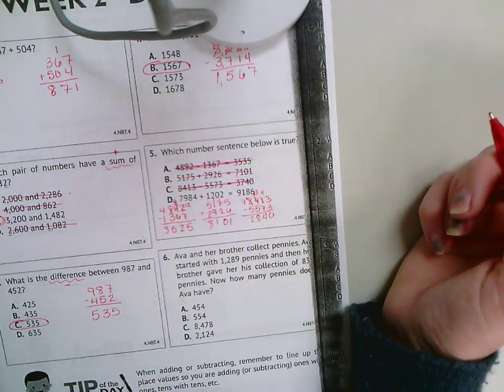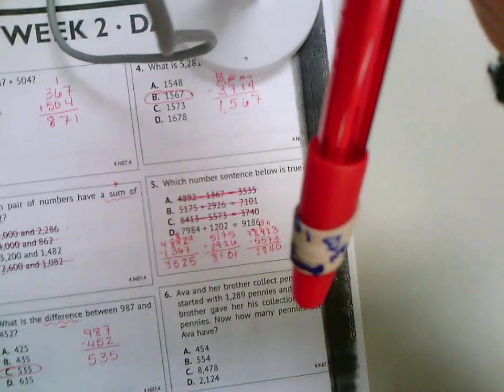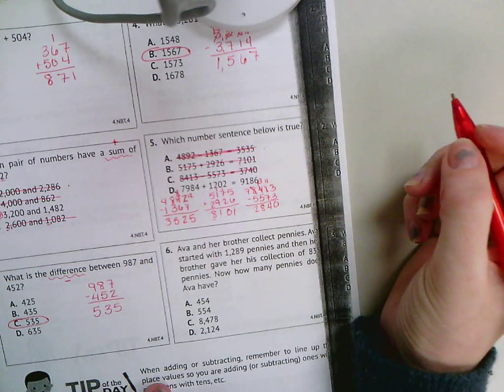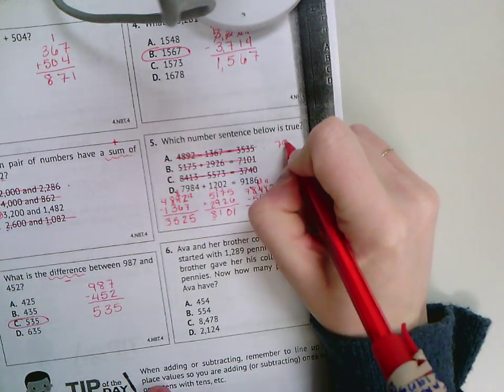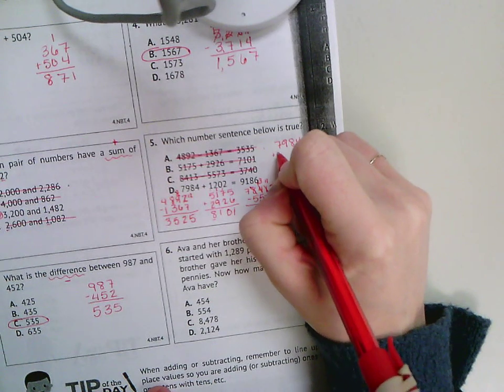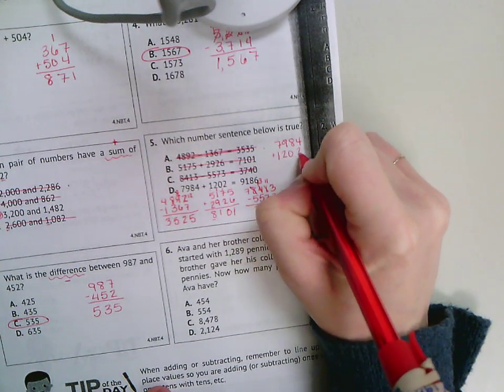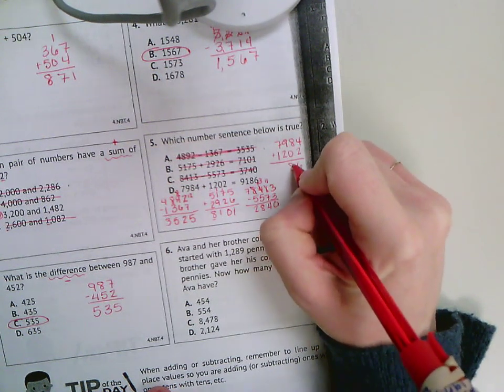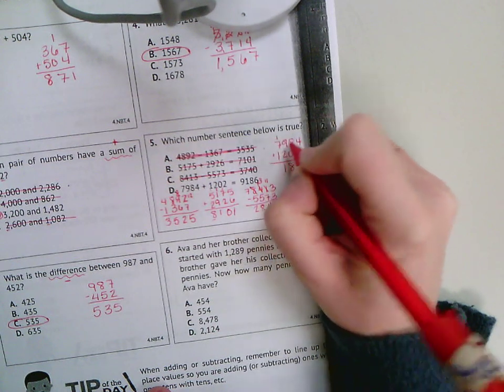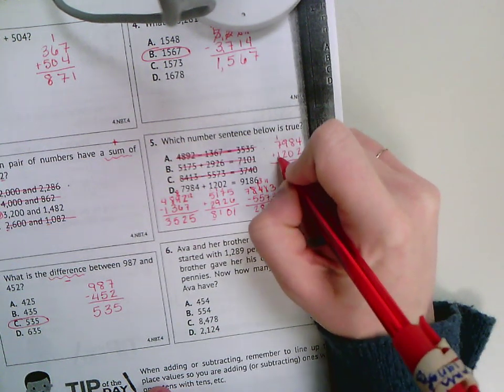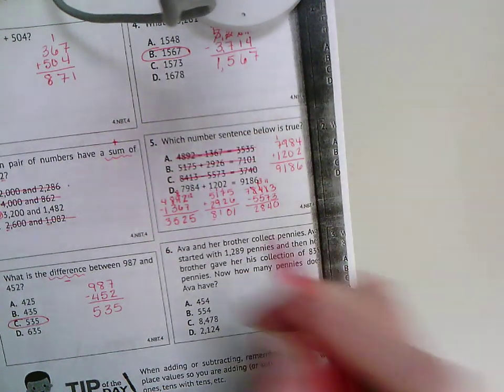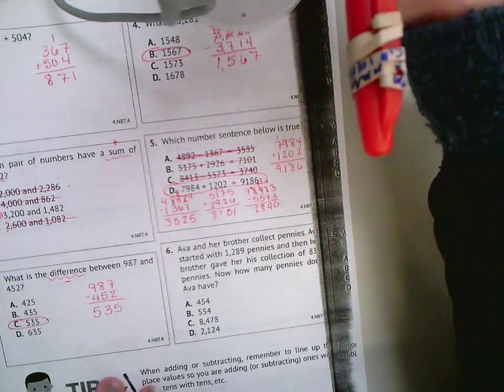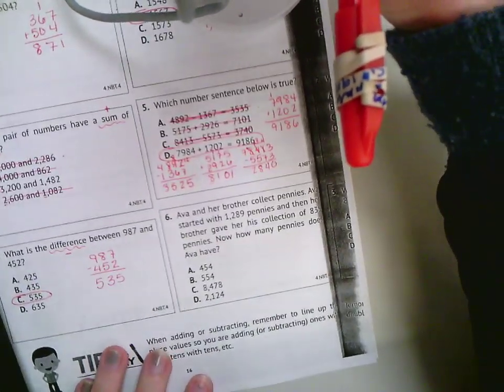So odds are my answer is D, but we can double check that. It's a little blurry. So we'll do 7,984 plus 1,202. 4 plus 2 is 6, 8 plus 0 is 8, 9 plus 2 is 11. 7 plus 1 is 8, plus 1 is 9. 9,186 then gives me my correct answer.